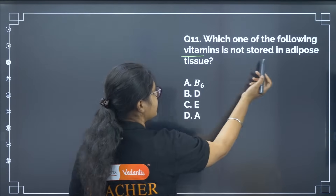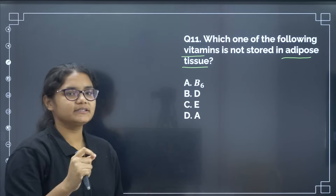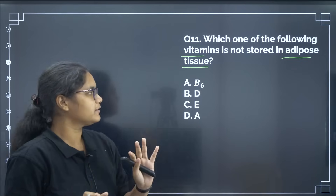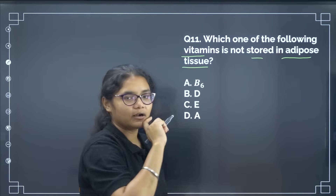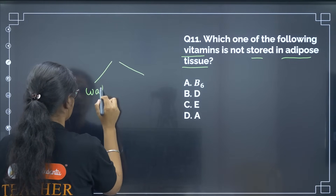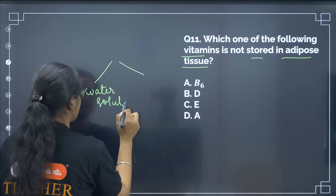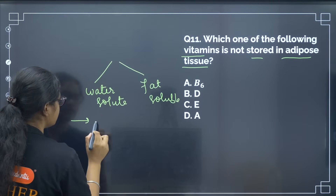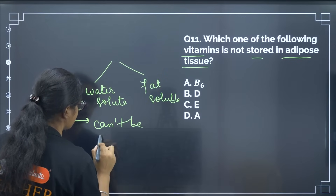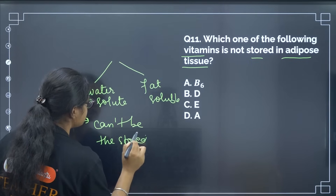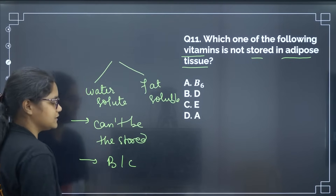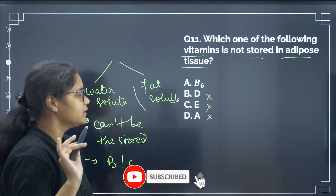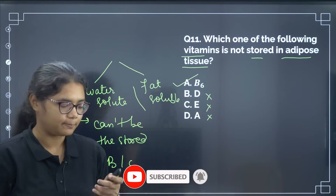Which of the following vitamins is not stored in adipose tissue? The question is about storage in the body. Vitamins are classified as water-soluble and fat-soluble. Water-soluble vitamins cannot be stored in the body. Examples of water-soluble vitamins are B and C. Options A, D, and E are fat-soluble and can be stored. So the correct answer is option number A — wait, the correct answer is the water-soluble vitamin, option number A.